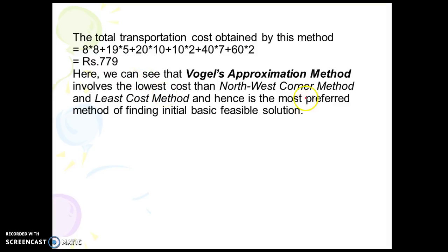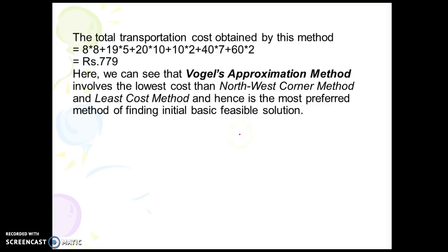We can see that Vogel's Approximation Method (VAM) gives the lowest cost compared to the Northwest Corner method and the Least Cost method, and hence it is the most preferred method for finding the initial basic feasible solution. That's it for today.